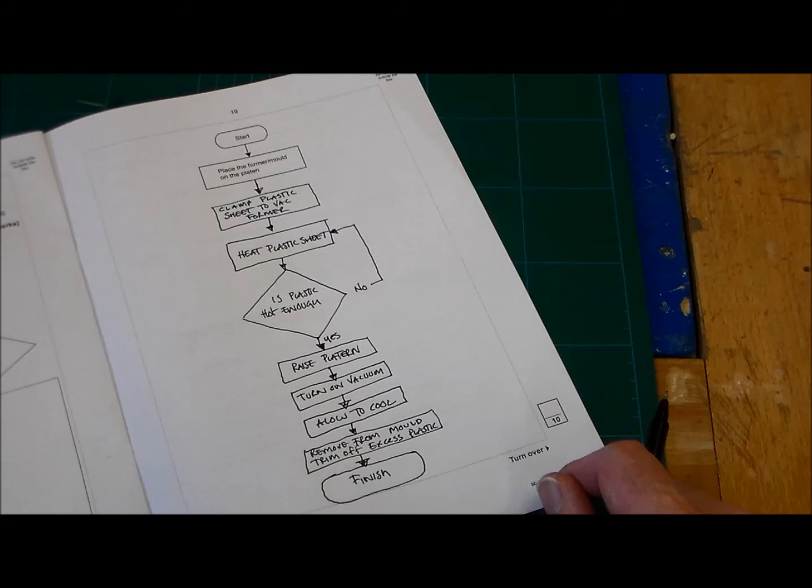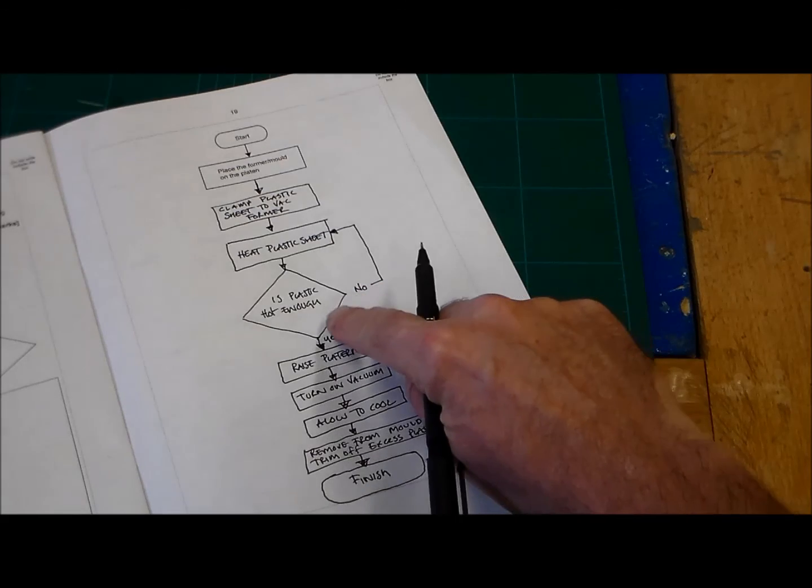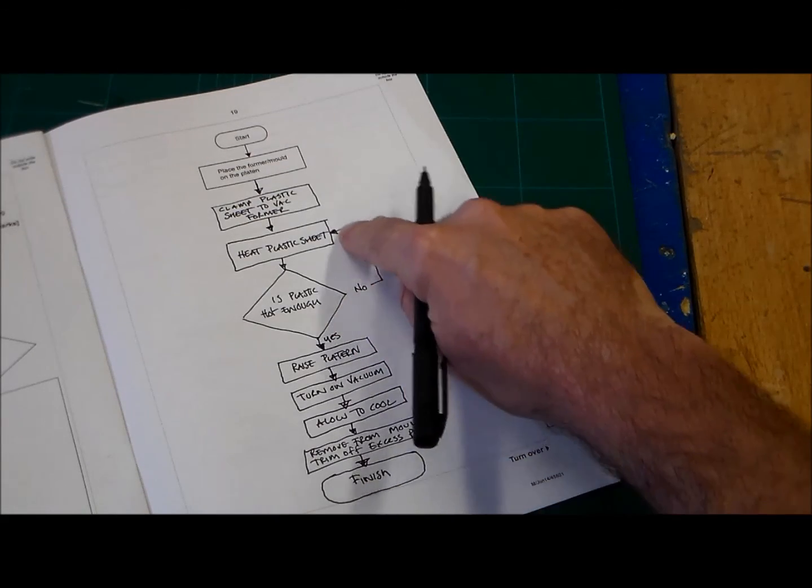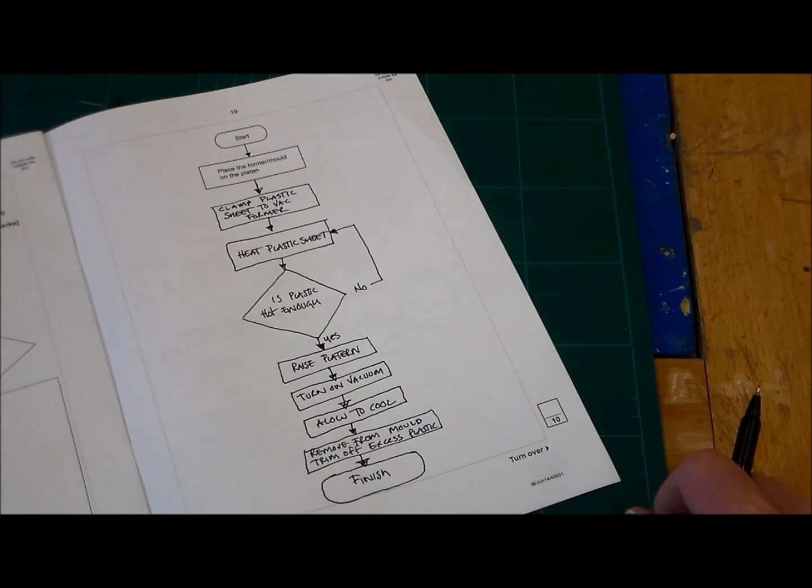We've got five marks for correct stages, two marks for correct use of process boxes, one mark for flow arrows, one mark for the correct use of decision box, and one mark for our return arrow. So there's our ten marks. And that's the flow diagram question.